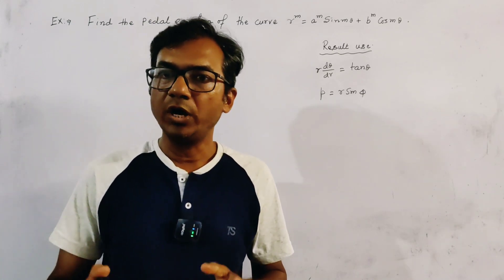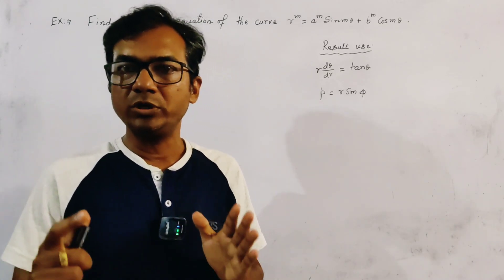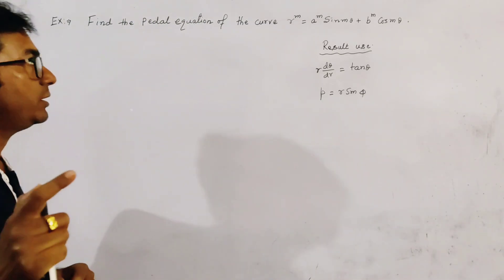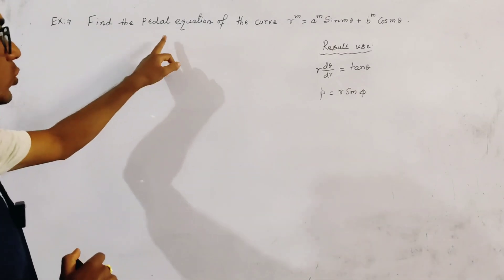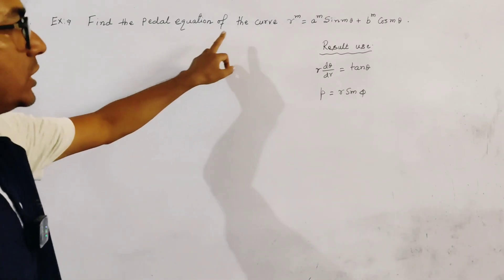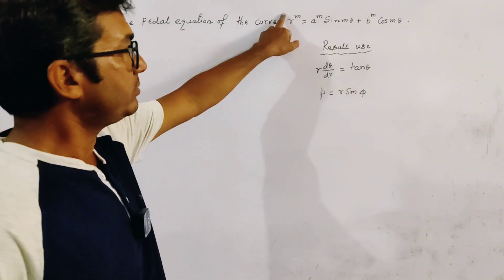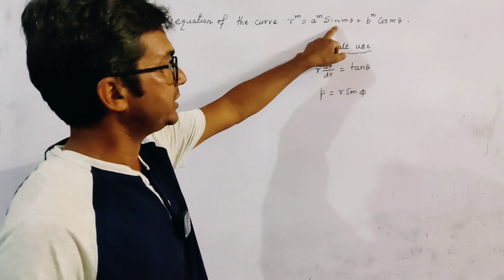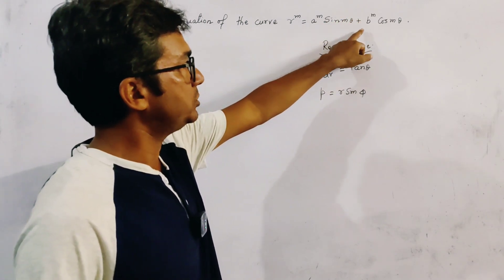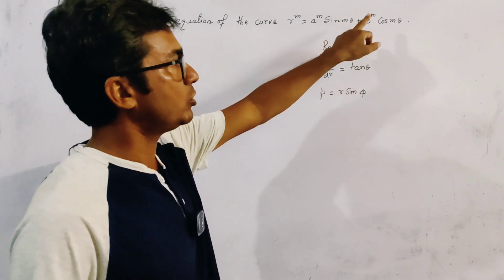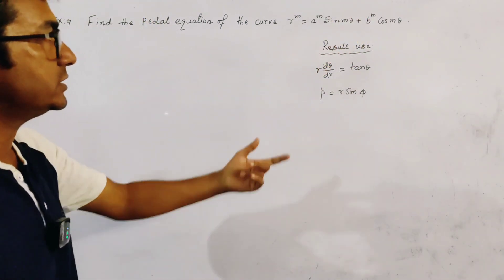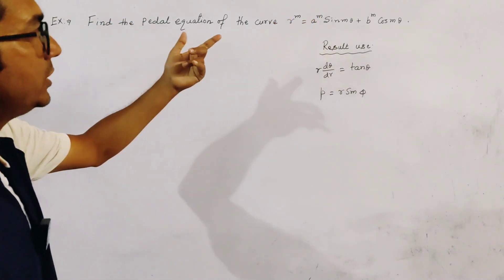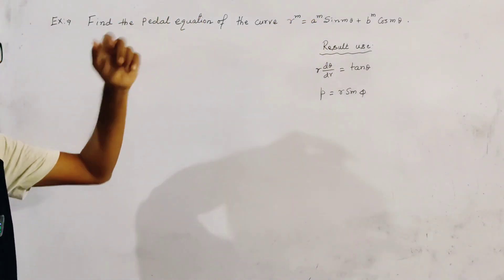In this class, we are going to discuss how to find the pedal equation of the curve r to the power m, this is equal to a to the power m into sin(mθ) plus b to the power m into cos(mθ). This is the polar curve, and we have to find the pedal equation of this curve.